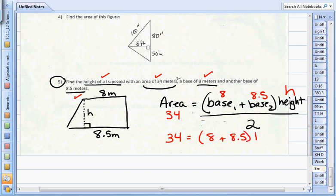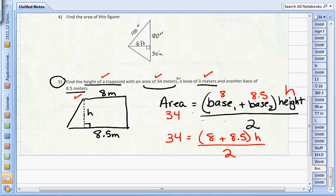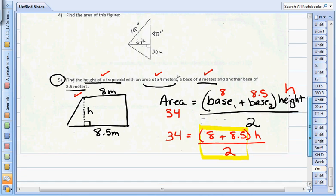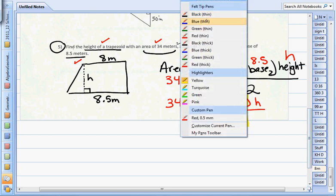I'm going to rewrite this formula. It looks like an equation: 34 equals (8 plus 8.5)h divided by 2. I could either solve for h by multiplying both sides by 2 and then dividing out the 8 plus 8.5, but I think I'm going to do it in one step instead. I'm going to take all of those numbers, 8 plus 8.5 dividing by 2, and combine them. 8 plus 8.5 is 16.5, and then divide that by 2, the result is 8.25.